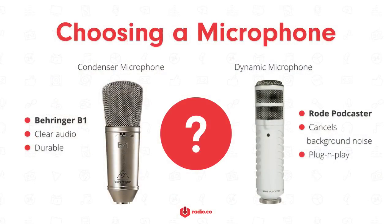There are two microphones we recommend: the Behringer B1 and the Rode Podcaster. The B1 is a condenser microphone which picks up clear audio with its wide diaphragm, so it's ideal if you've got your own studio and have guests on board. The Rode Podcaster, on the other hand, is a dynamic microphone — excellent at cancelling out background noise, so perfect if you're in a noisy area or have a guest close by. Which one you choose depends on your home radio studio setup, but both are great reliable starter microphones.